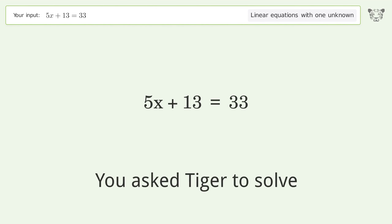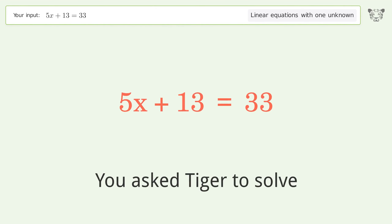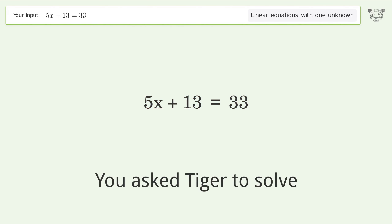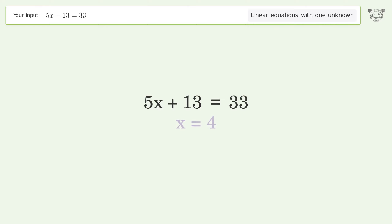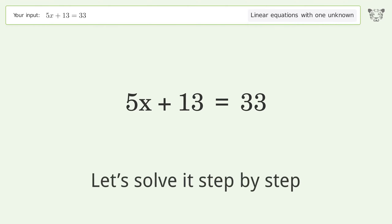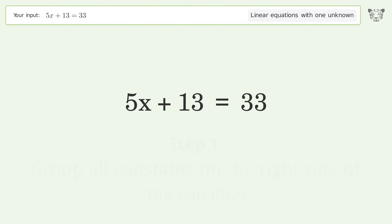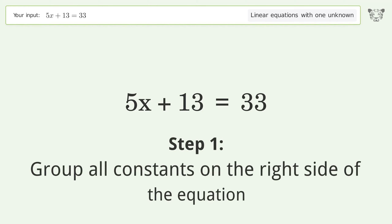Tiger is asked to solve a problem dealing with linear equations with one unknown. The final result is x equals 4. Let's solve it step by step: group all constants on the right side of the equation.